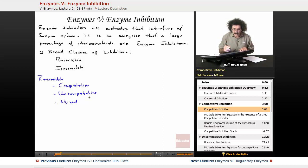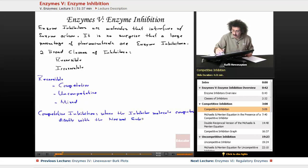The first thing we're going to deal with is competitive inhibition. It's the most intuitive one, the one that is most easily understood. Competitive inhibition is where the inhibitor molecule competes directly with the normal substrate for binding to the active site. It competes directly with the normal substrate for the active site.